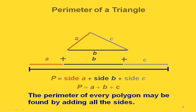For a triangle, if we know all three sides, then all we're doing is adding up those three lengths. So we have side A, side B, and side C, and we're just adding those three up. This is true for the perimeter of any type of polygon — we can just add up all the sides to find the perimeter.